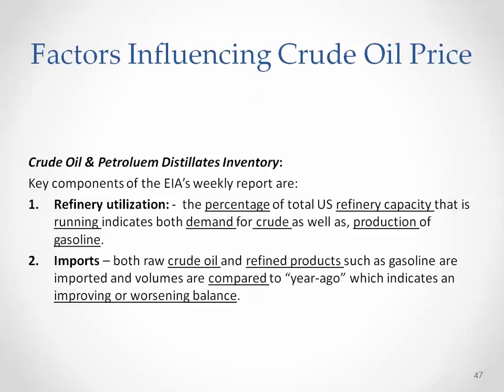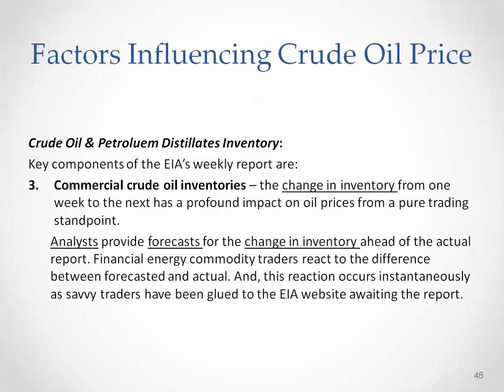First, refinery utilization. The percentage of total US refinery capacity that is running indicates both demand for crude oil as well as production of gasoline. The second item is the import reports, both raw crude oil and refined products such as gasoline. They are imported and volumes are compared to last year, which could be indicators of improving or worsening the balance.